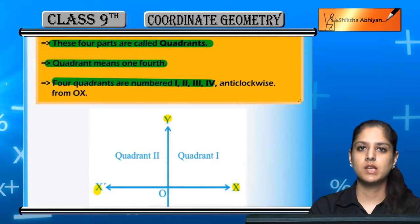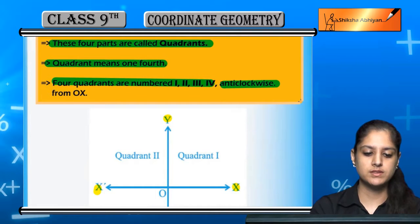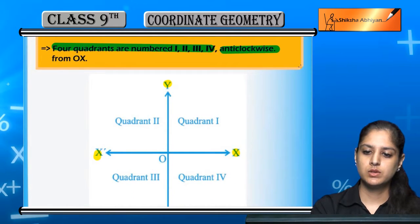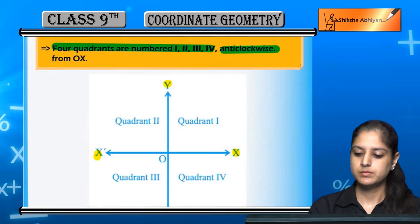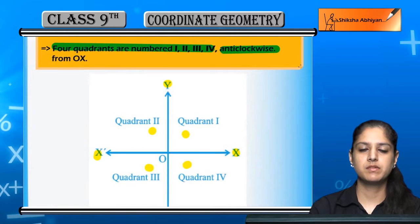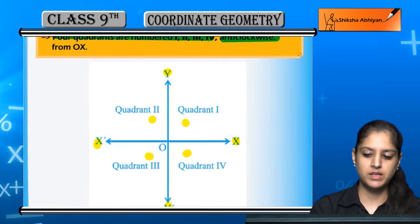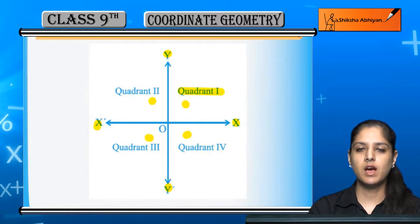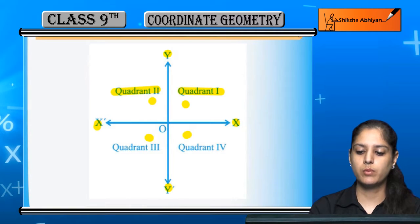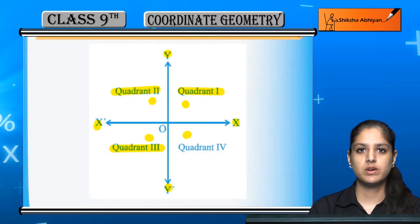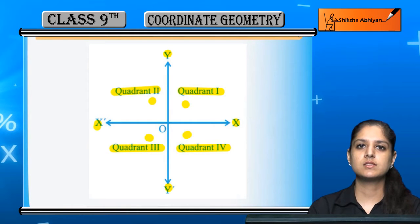These four quadrants are named anti-clockwise: one, two, three, four. Quadrant one is here, and going in the anti-clockwise direction we have quadrant two, quadrant three, and quadrant four. So we divide the plane into four quadrants.